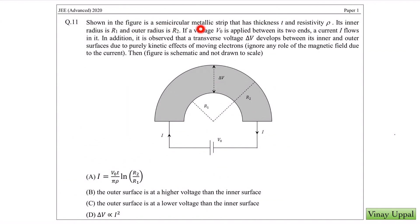Shown in the figure is a semicircular metallic strip that has thickness t and resistivity ρ. Its inner radius is r₁ and outer radius is r₂. If a voltage V₀ is applied between its two ends, the current i flows in it. In addition, it is observed that a transverse voltage ΔV develops between its inner and outer surfaces, purely due to kinetic effects of moving electrons.